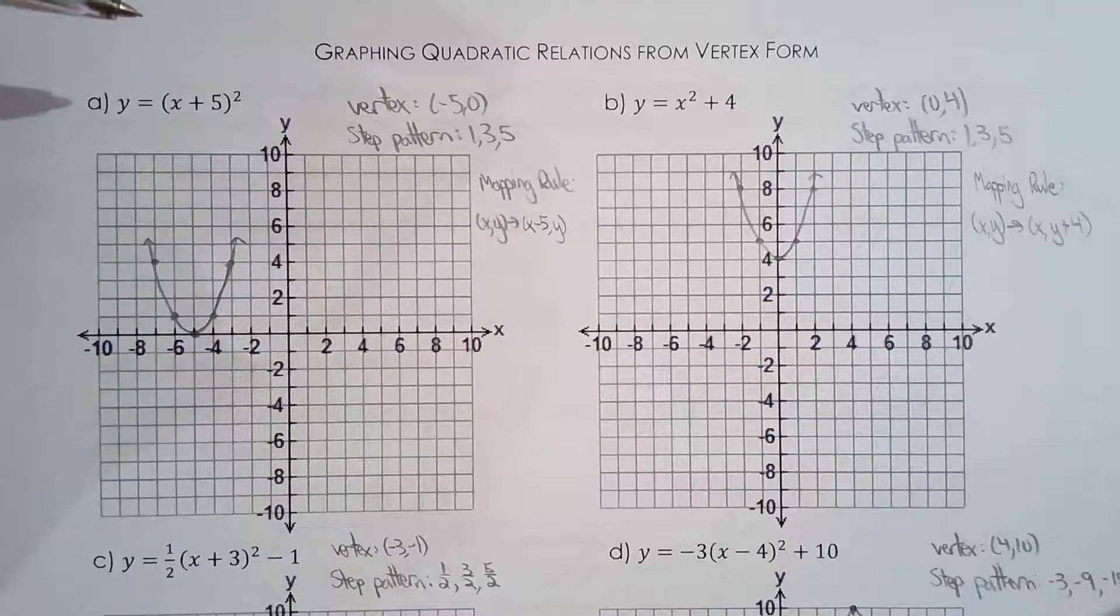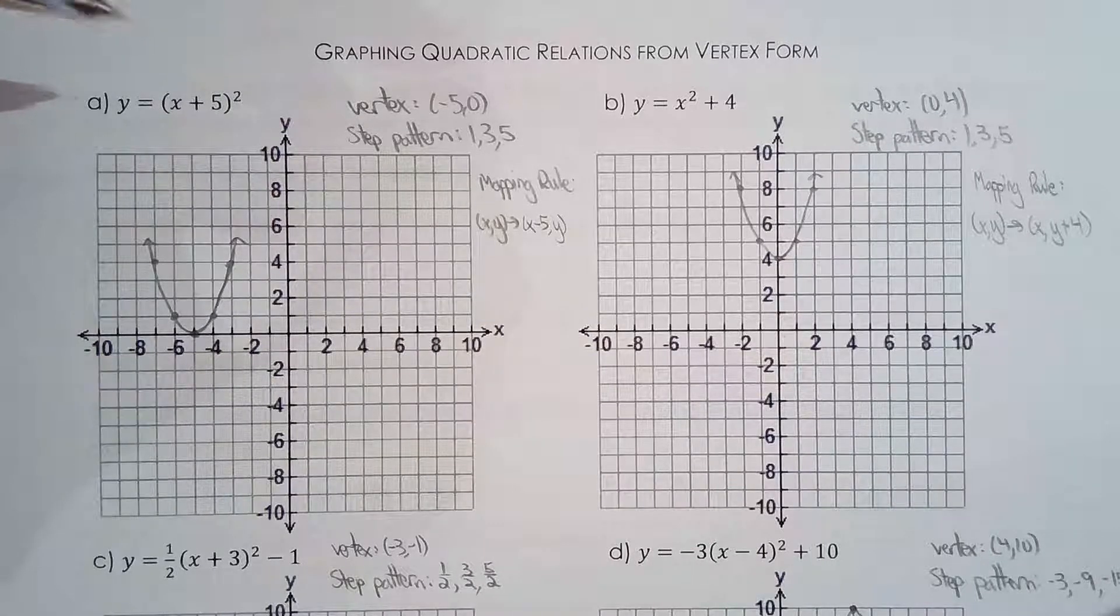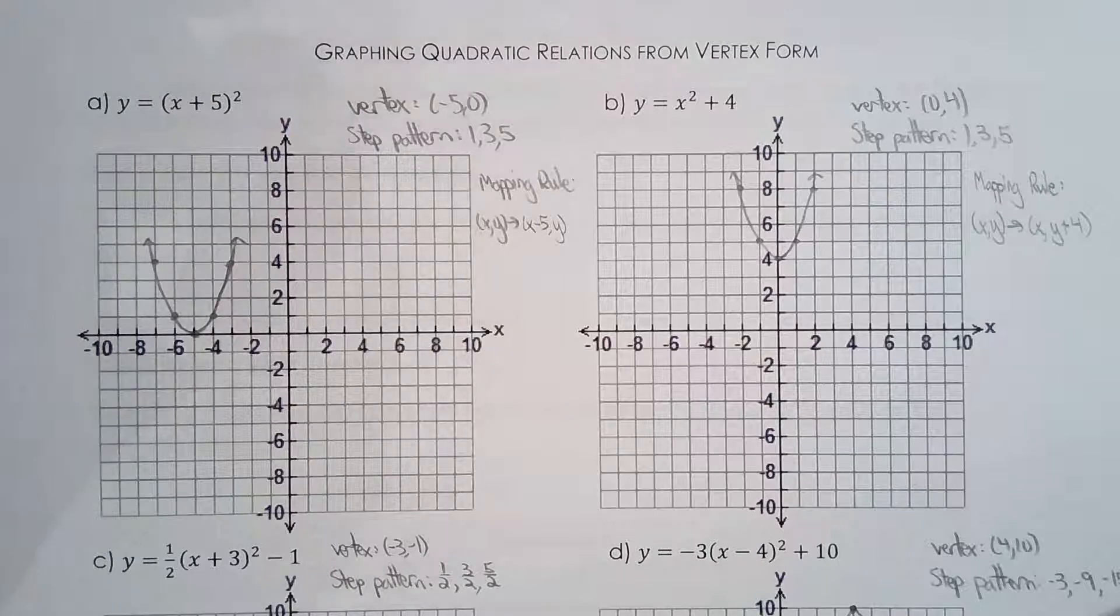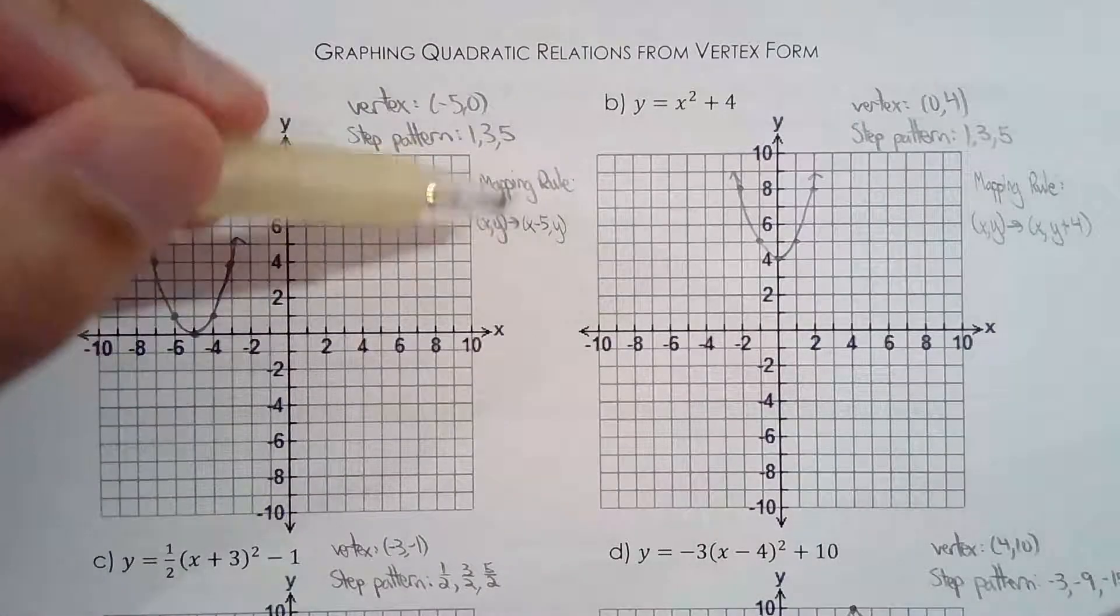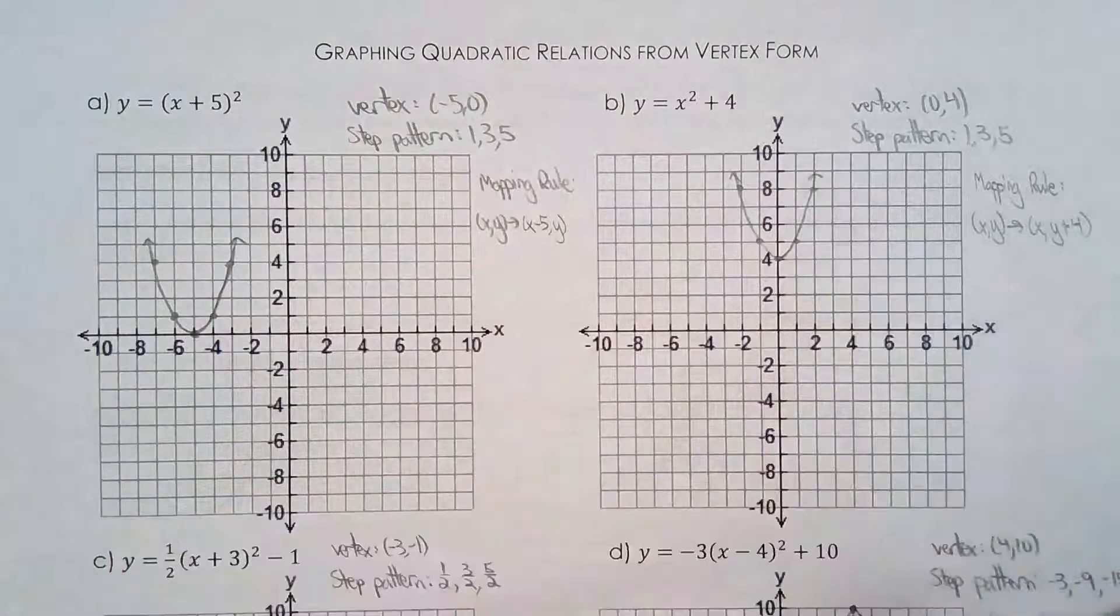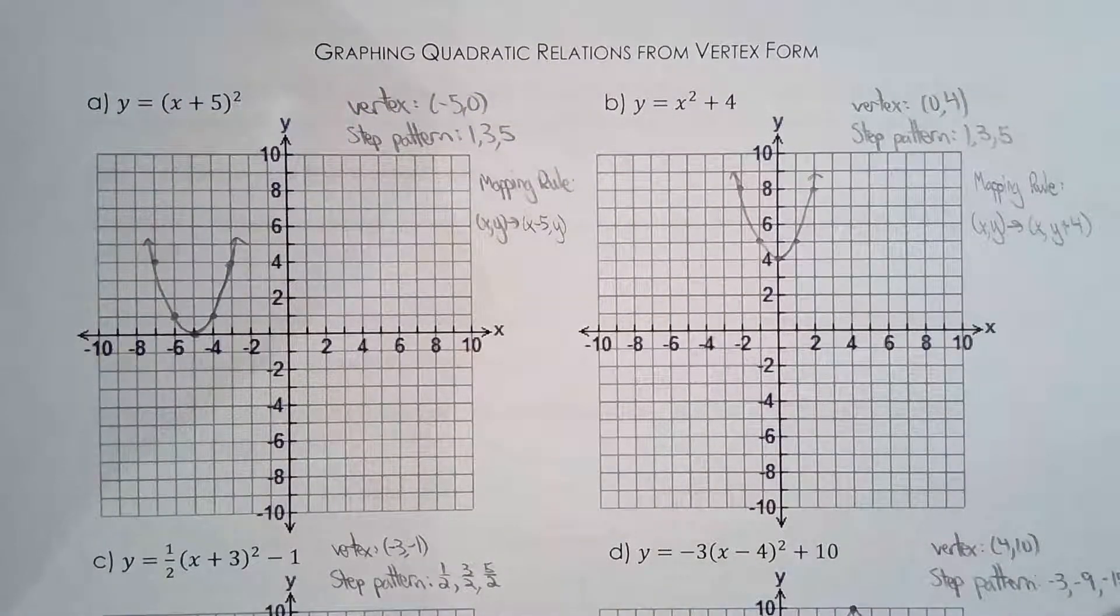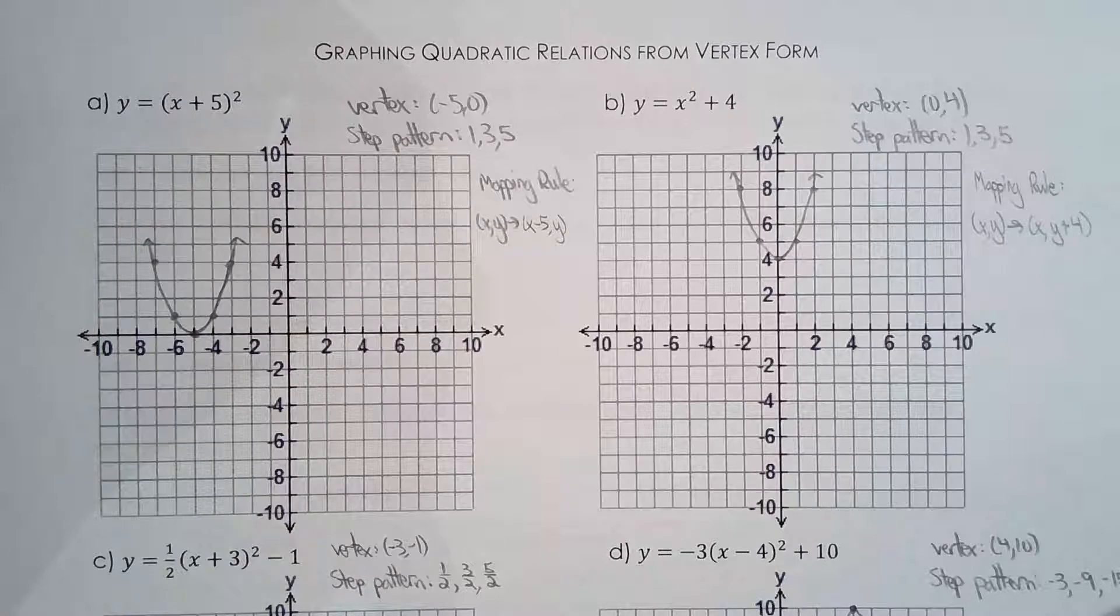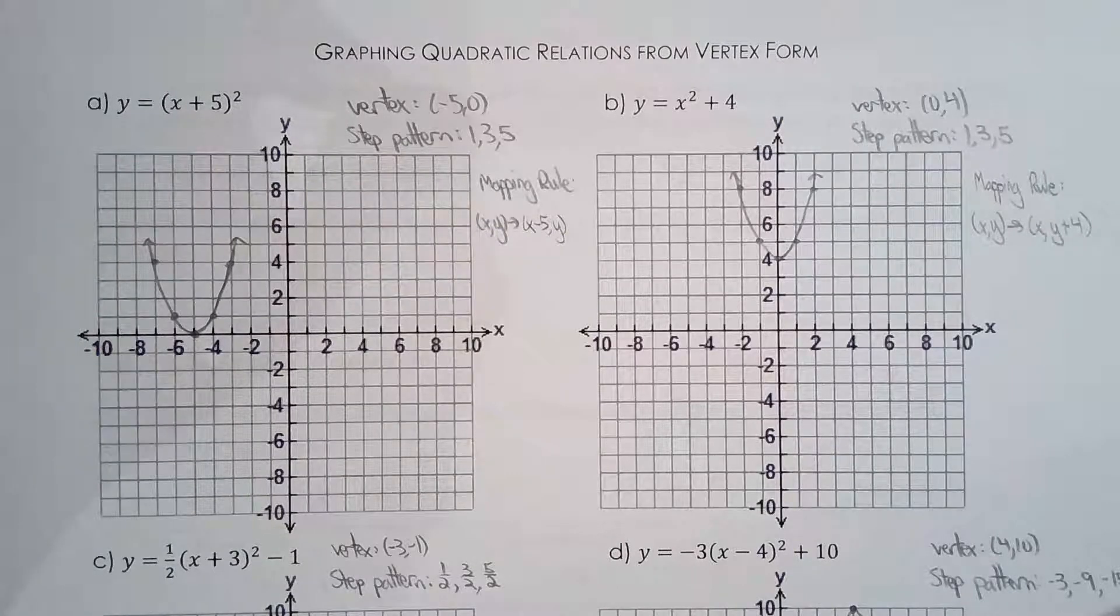I personally use the step pattern, but just in case you use the mapping rule technique, I also gave you the mapping rule. I just didn't give you the table, but since you have my key points, then you can match it up with your table. At the end of the day, all you really want is for the parabolas to look the same on the graph.